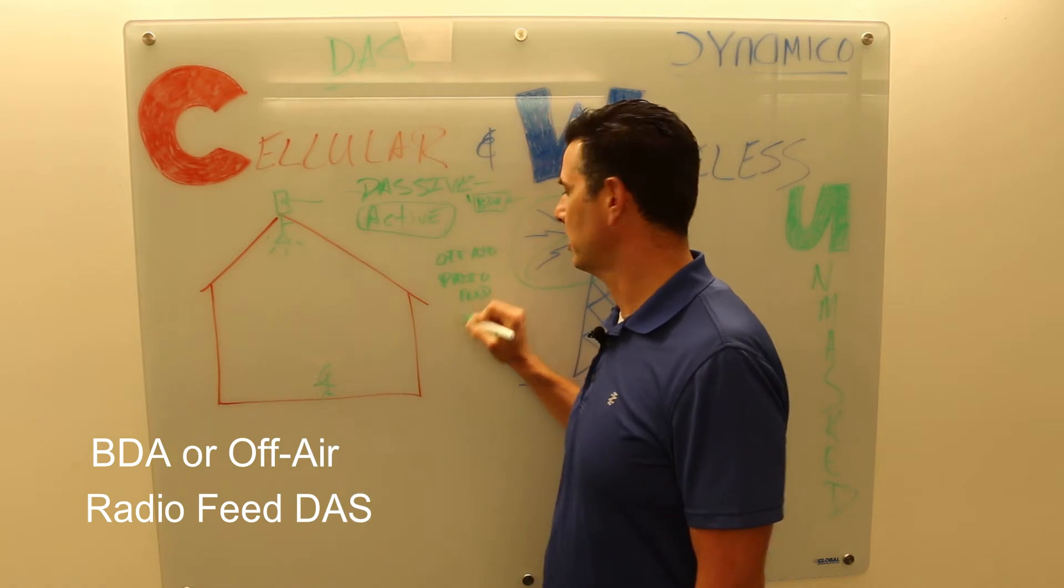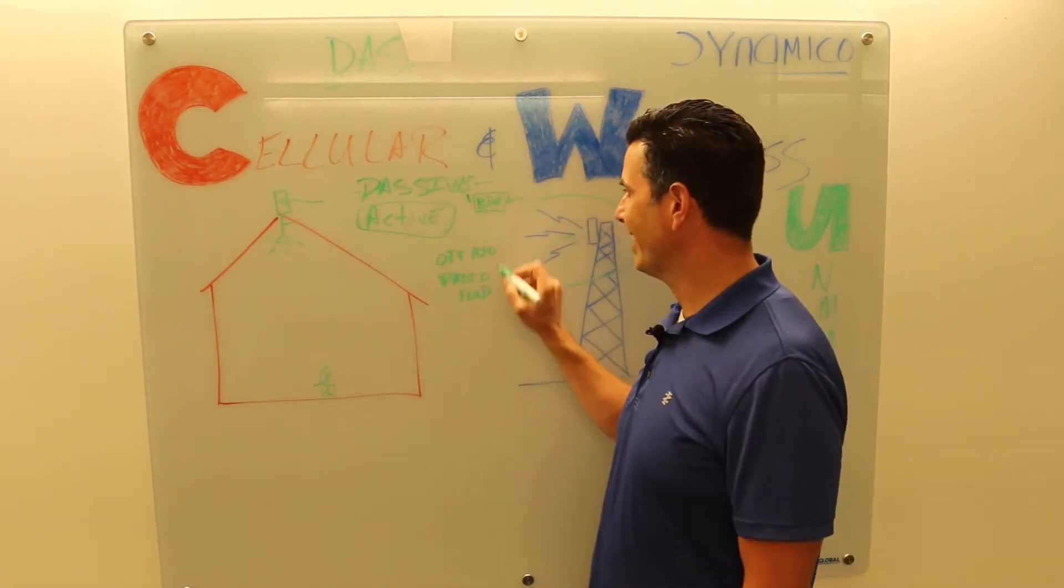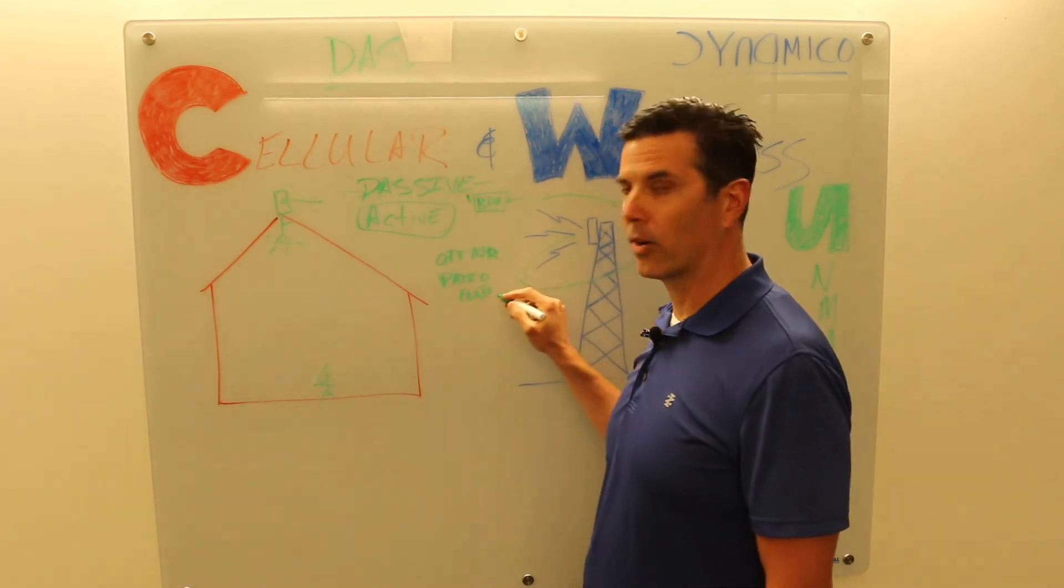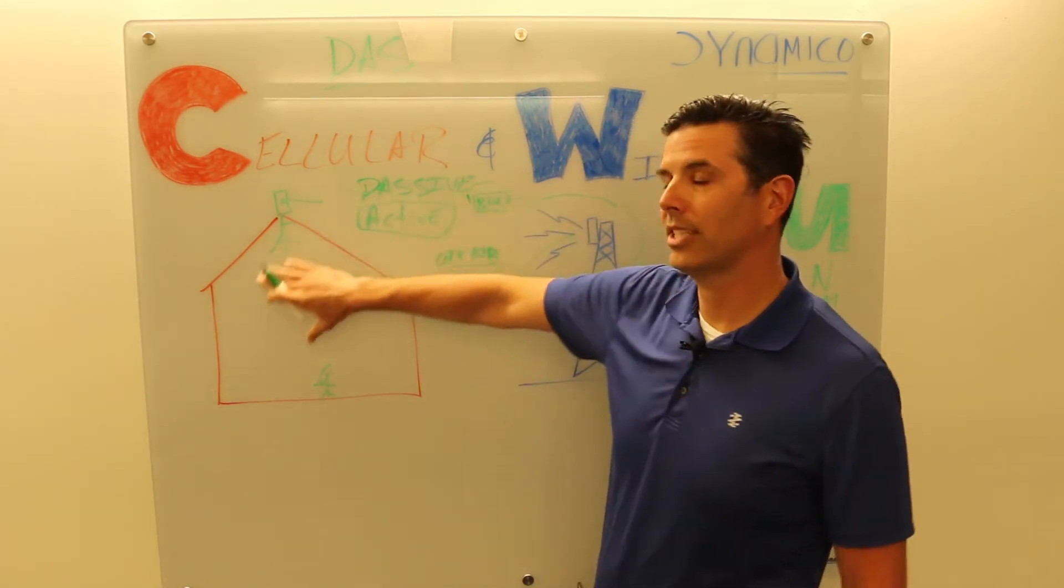Many of the DAS systems you see in airports and large stadiums and big buildings don't pull the off-air signal from the local cell tower. They're fed with a radio feed.